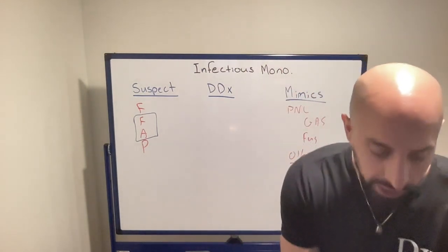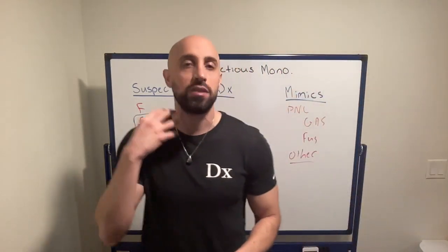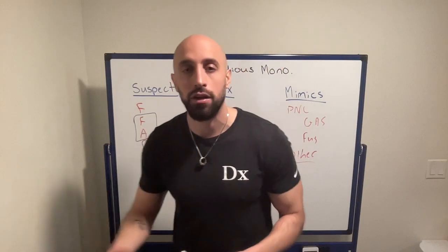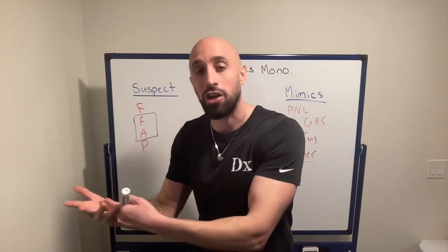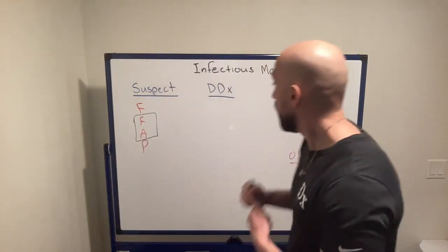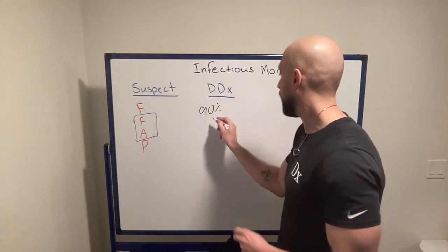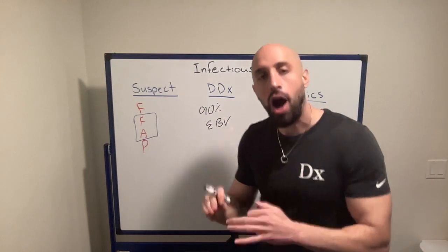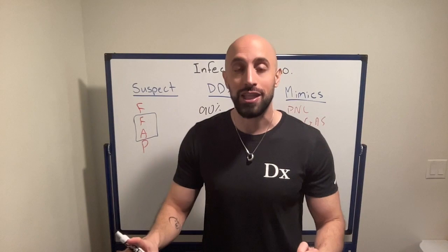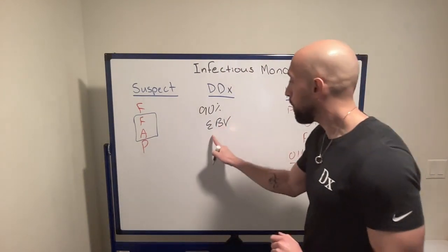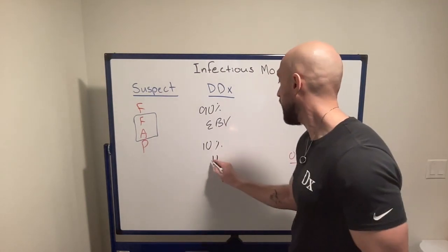Once you are at infectious mononucleosis and you've ruled out group A strep — you did a rapid strep or culture, or the patient is not getting better — that's another clue you're not dealing with bacterial pharyngitis. Ninety percent of the time, if you say EBV, you're right. That's EBV-positive infectious mononucleosis. But 10% of the time it's not due to EBV. You have to think about EBV's cousins, which includes HIV and CMV.